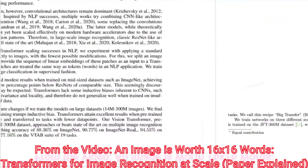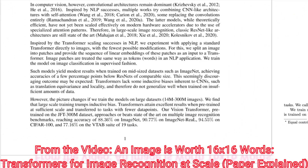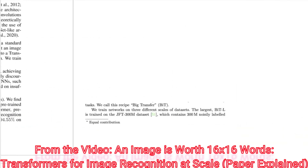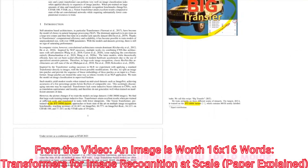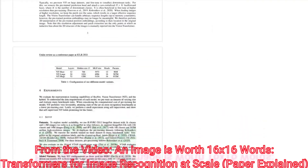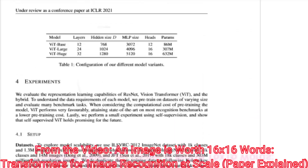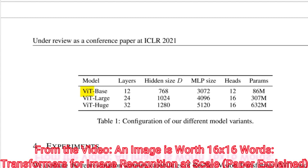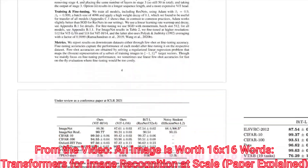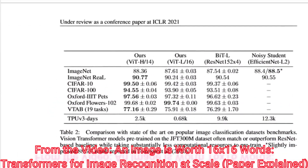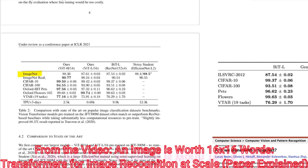Disregard the fact that the paper we're discussing here uses a JFT-300M dataset that is not available to the public, only to Google. And actually, this other paper also trains on that. Disregard that also. Largely disregard the fact that their model is called ViT, while the other paper's model is called BiT. Disregard the fact that they train on the exact same datasets — ImageNet, CIFAR-100, Pets, Flowers, and VTAB, the Visual Task Adaptation Benchmark — which is also by Google.